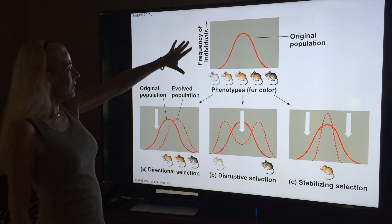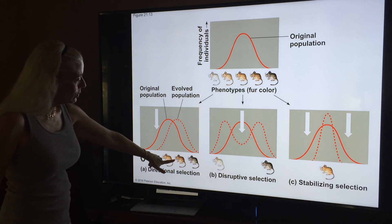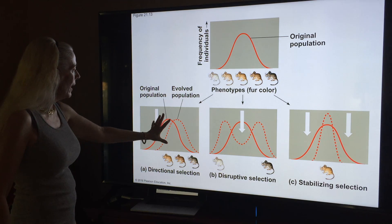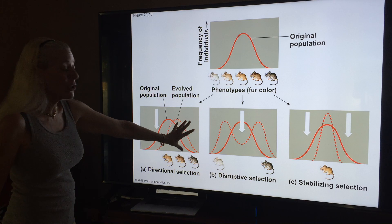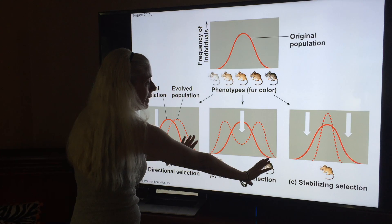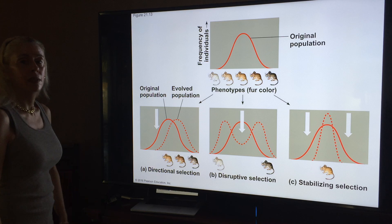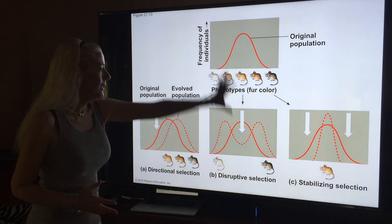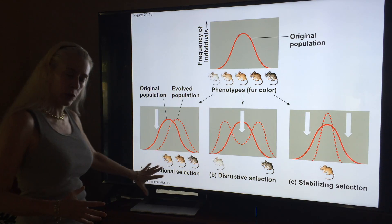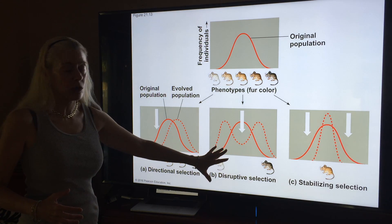Looking at the original population using mouse fur color as an example: directional selection shows the population shifting in one direction. Disruptive selection splits the graph so only dark and light mice remain. Stabilizing selection results in only the average, brownish mouse. Please be able to look at pictures of the graphs and pick from multiple choice which type of selection they represent — the answer better be yes.